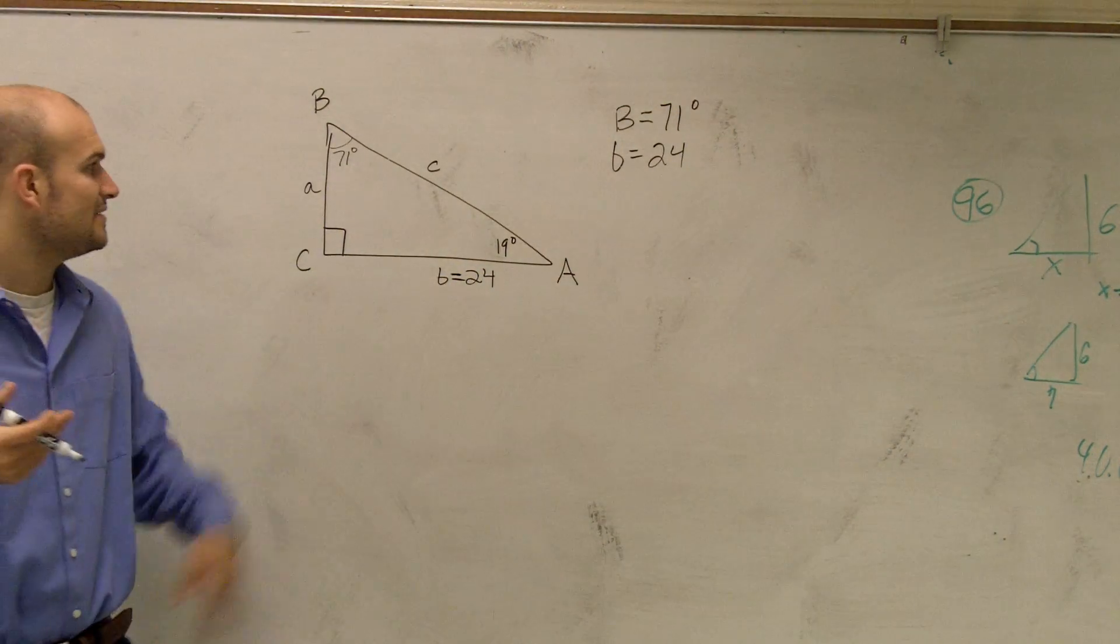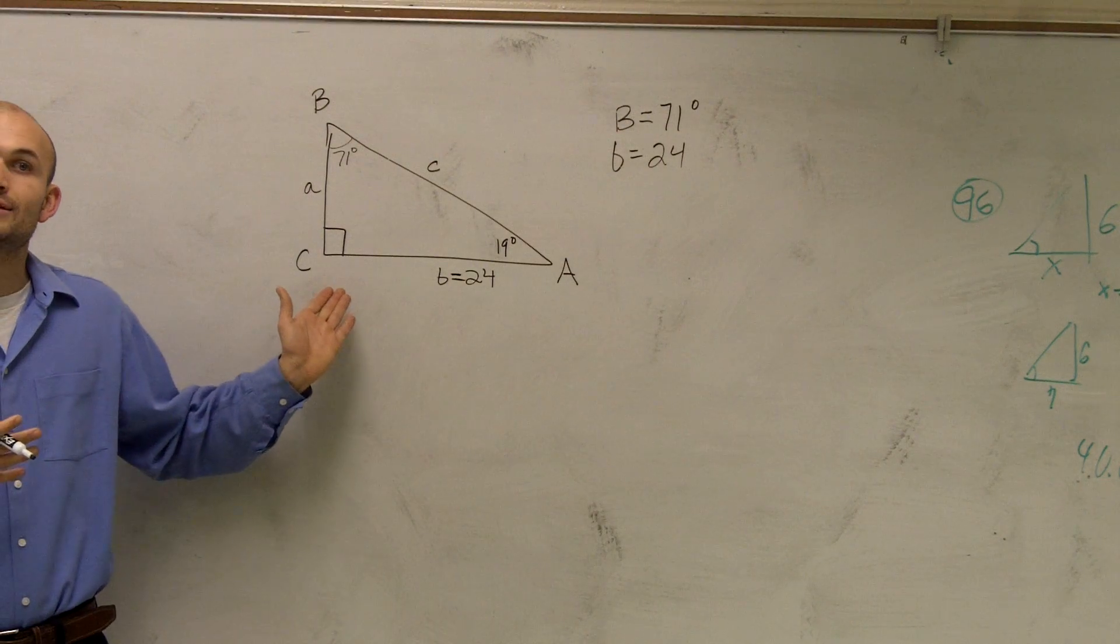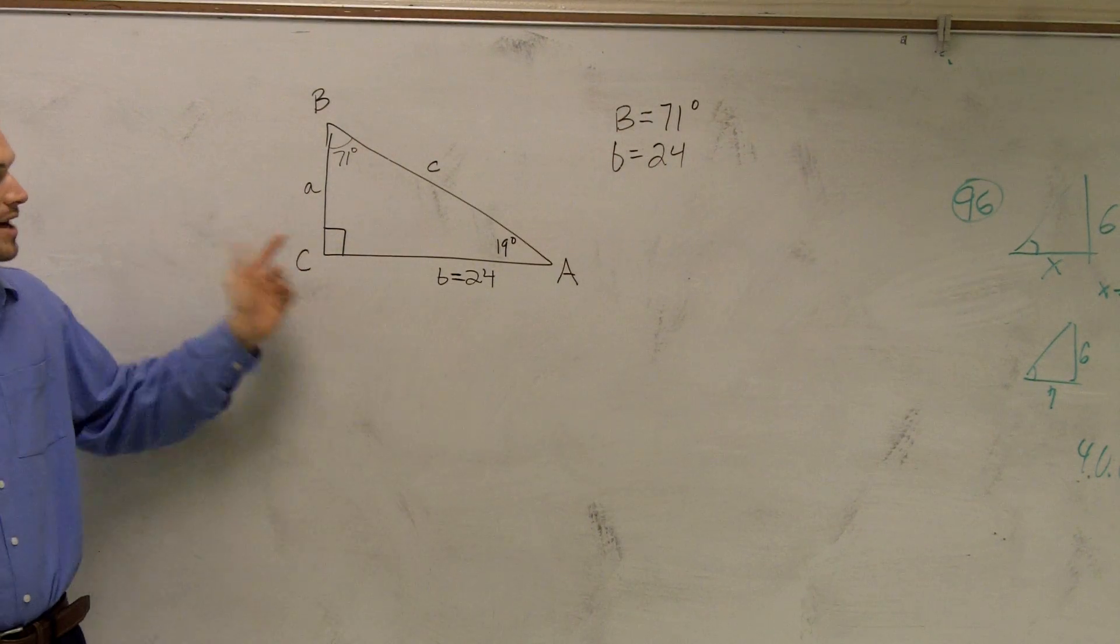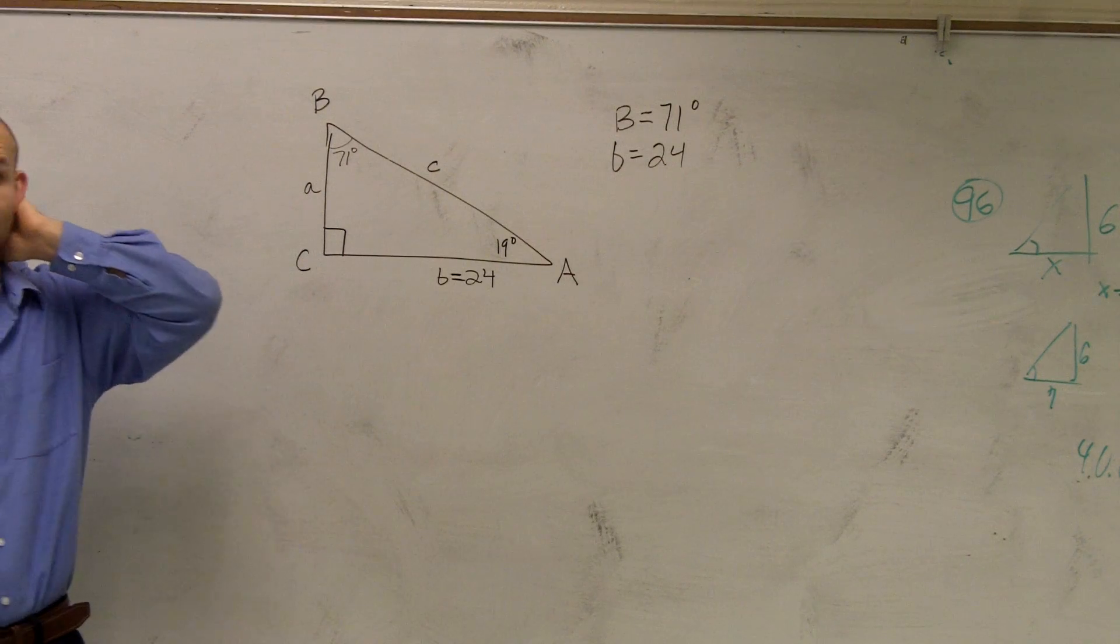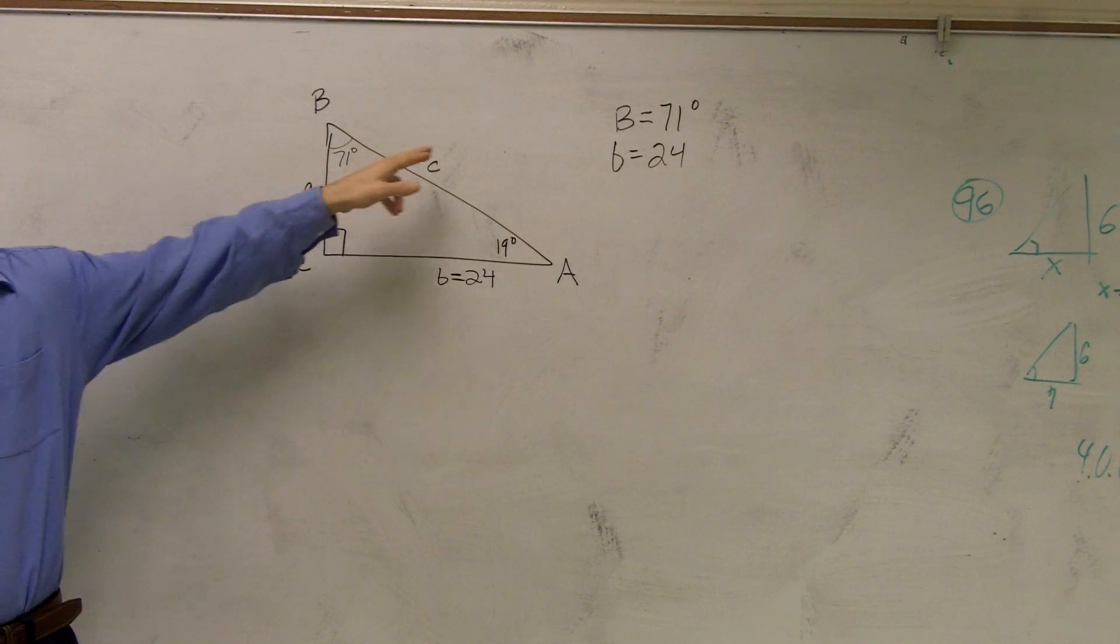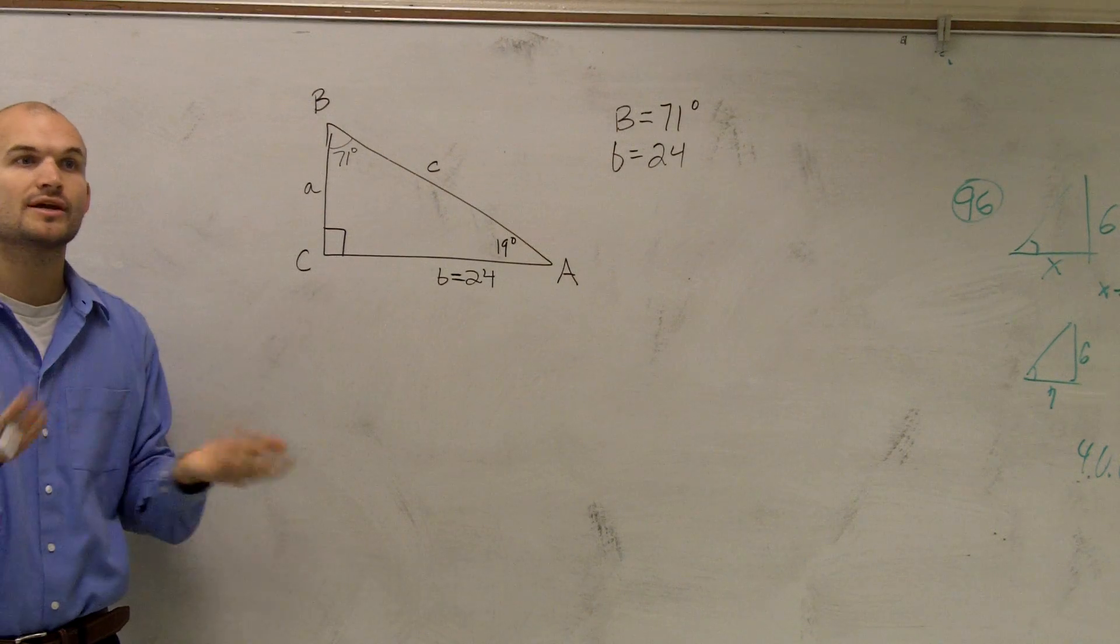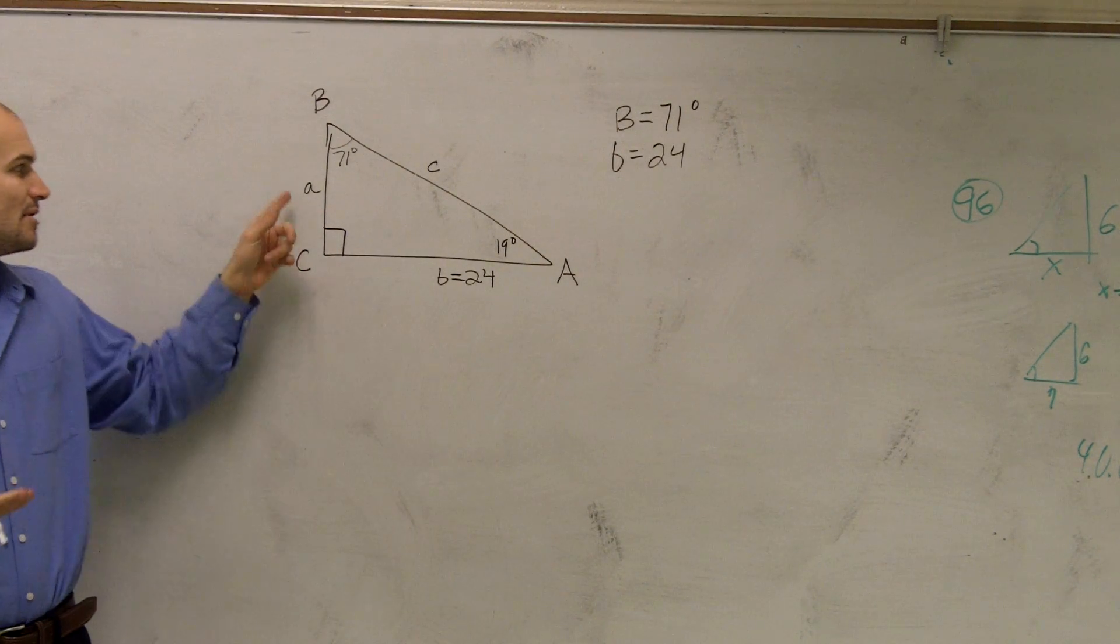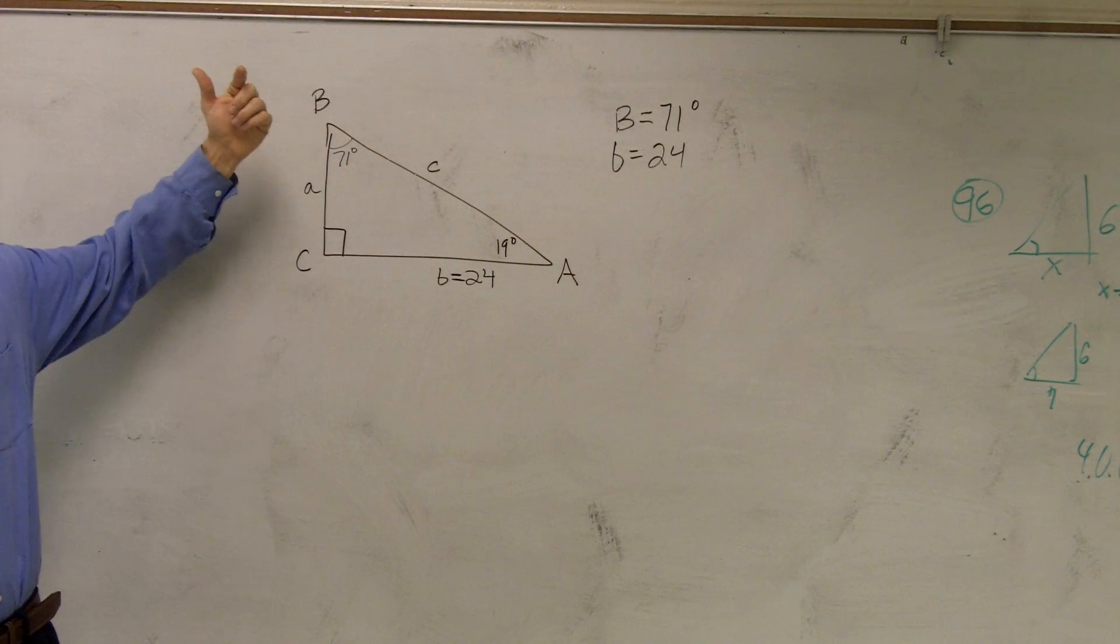So now what we need to do is we need to find the missing lengths. Now, you could say it's a right triangle, so we could use Pythagorean theorem. But our problem is we only have one side length, so we have two missing lengths. So to find one of our missing lengths, either A or C, I'm going to have to use our trig properties. Now, I don't care which one you guys want to use, but does anybody want to figure out A or C, which one first? A? Okay.